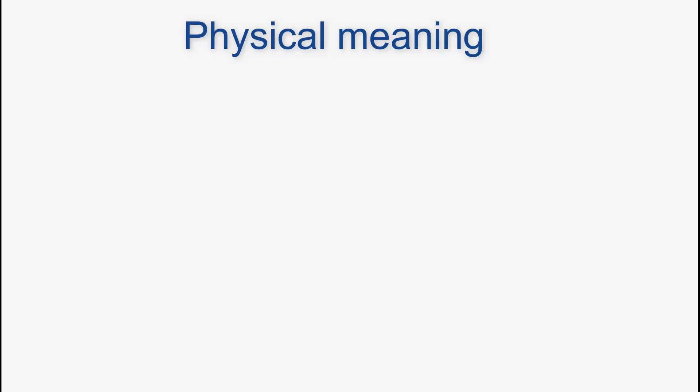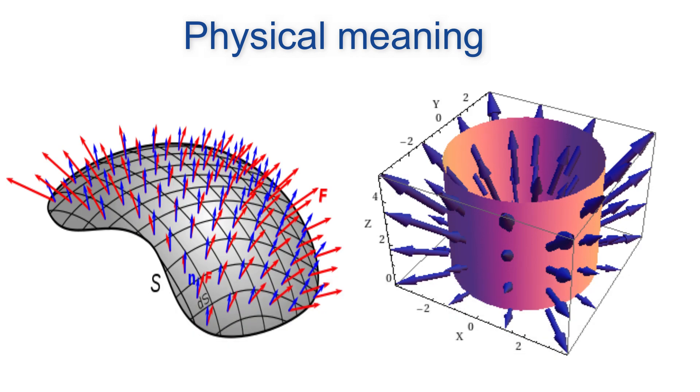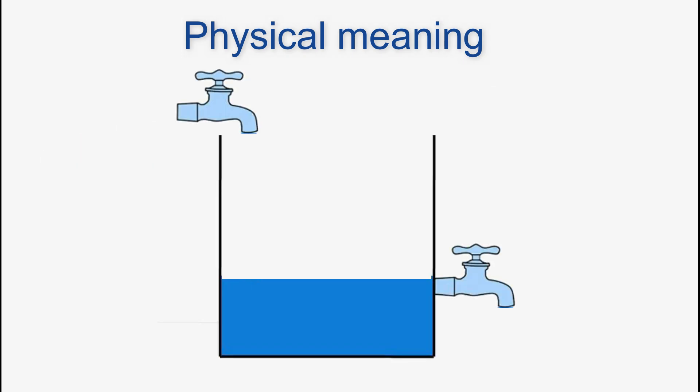Let's first understand what flux physically means. Before going mathematical, flux is a vector quantity which determines the amount of substance passed through a surface. This surface can be open or closed. Let's take our example. Suppose we have a tank with one inlet and one outlet.